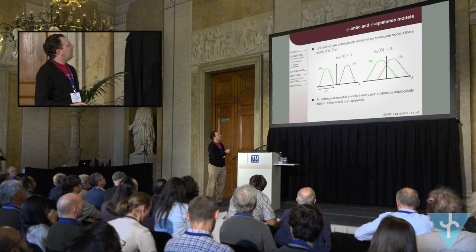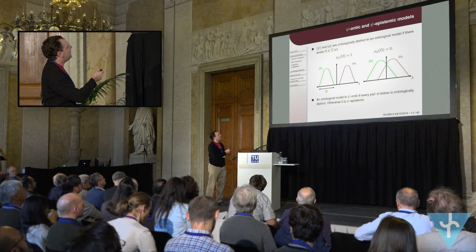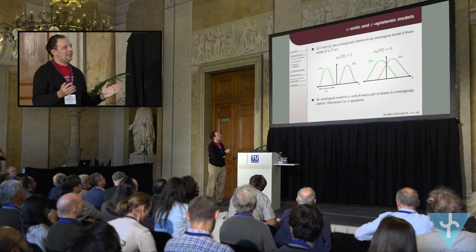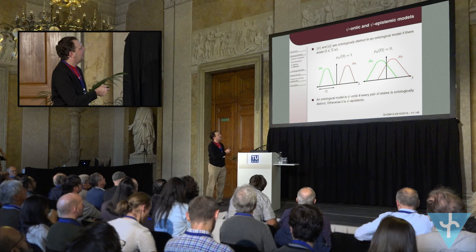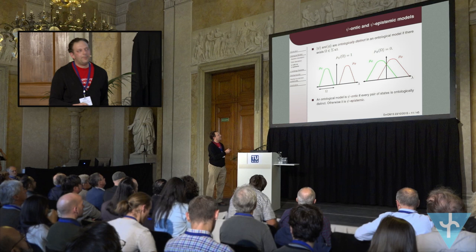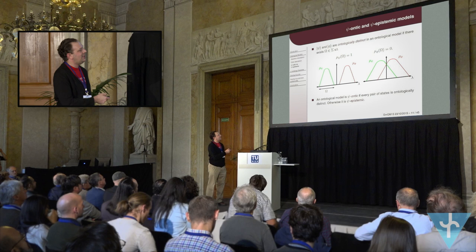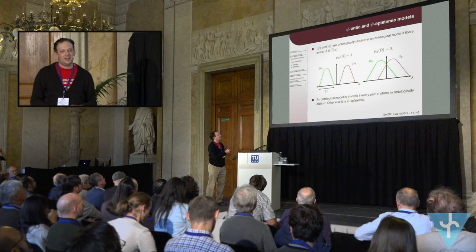Within this formalism, we can now formalize what it means for the quantum state to be real. Two quantum states are ontologically distinct in such a model if the corresponding probability distributions have no overlap. We're also interested in the opposite case — ontological indistinguishability — where the distributions do overlap, potentially explaining the indistinguishability of quantum states. An ontological model is said to be sci-ontic if every pair of states has no overlap at all; otherwise it's called cyber-systemic. Bear in mind this is a very weak definition — it places no bounds on how large the overlap has to be, so even a model where only a single pair has a tiny overlap would satisfy it.